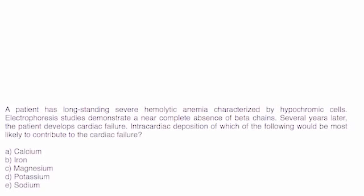Just a couple short vignettes. Patient has longstanding severe hemolytic anemia, so we've got MCV of less than 80, characterized by hyperchromic cells. Electrophoresis demonstrates a near complete absence of beta chains. Several years later, the patient develops cardiac failure. Remember we talked about that, iron overload.